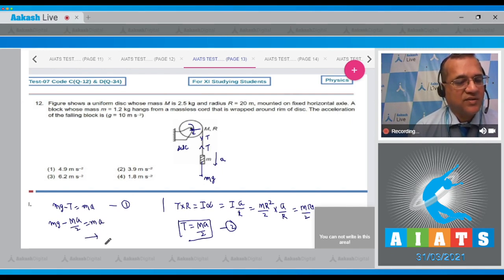When you fill, then mg minus capital Ma by 2 equals ma. You get the value of acceleration a equals 2 small m into g divided by capital M plus 2m.